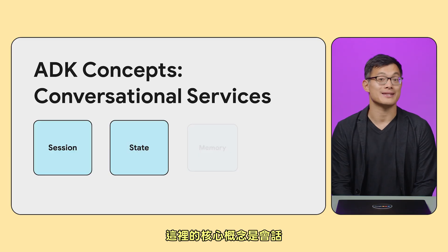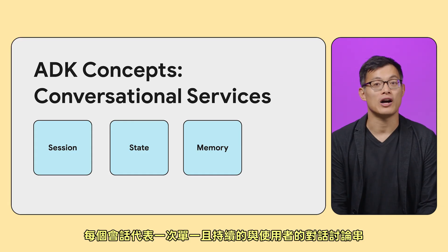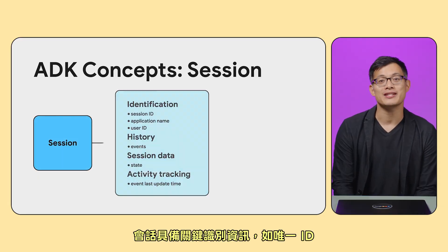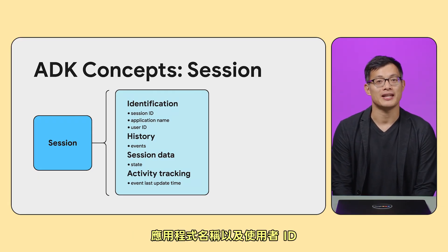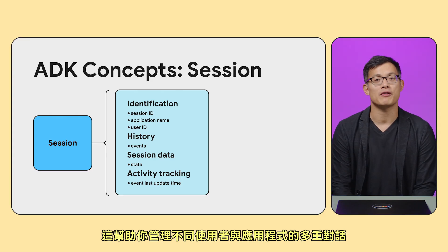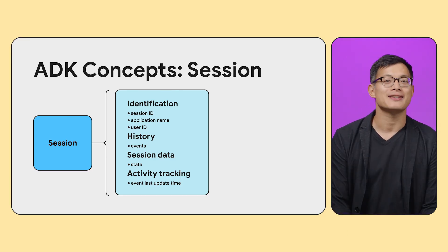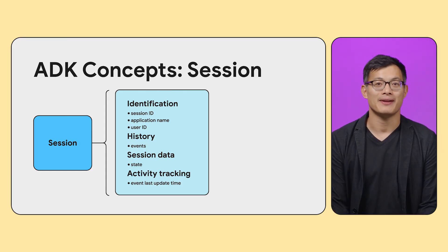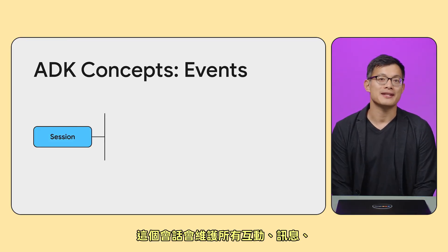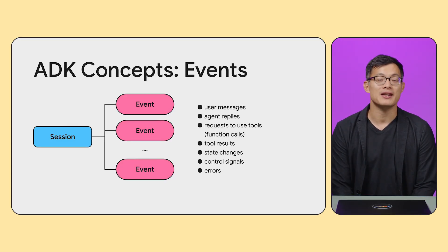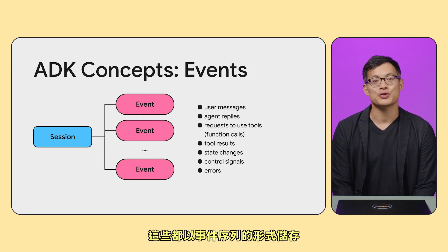Choosing the right approach depends on the problem's scope, required flexibility, and need for distinct areas of intelligence or capability. A key aspect for handling complex, ongoing interactions is context and knowledge management. ADK provides comprehensive tools for managing this. The core concept here is the session — each session represents a single, ongoing conversation thread with a user. Sessions have key identifiers like a unique ID, an application name, and a user ID, helping you manage multiple conversations for different users and applications. Sessions also store the history, a shared state map, and tell you when the last event happened. The session maintains a history of all interactions — messages, tool calls, results, and more — stored as a sequence of events.